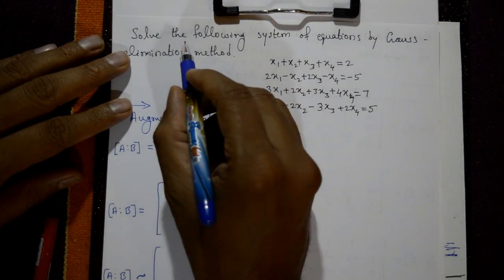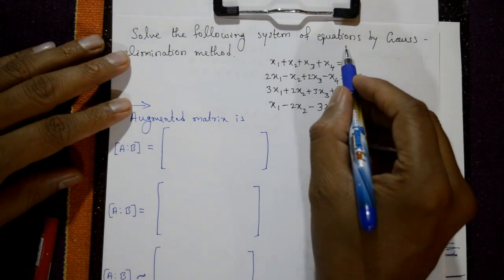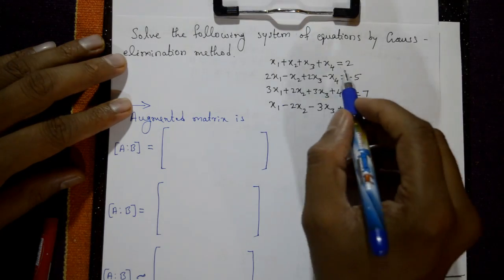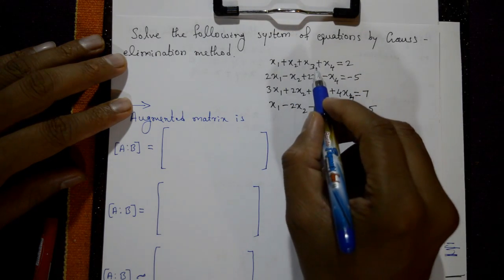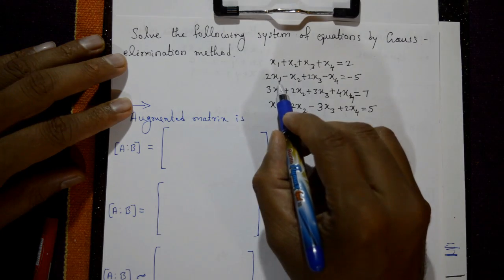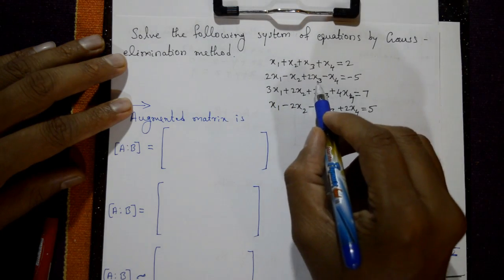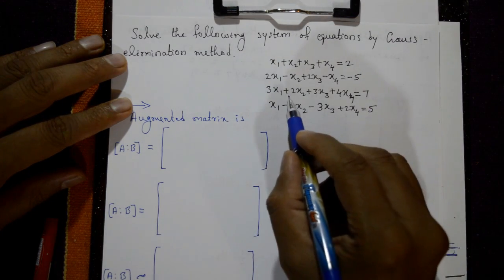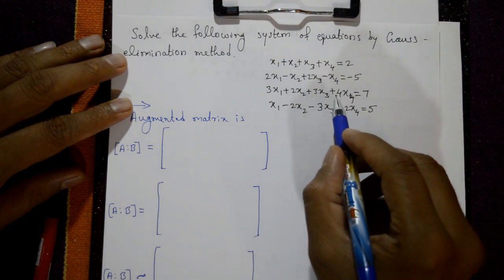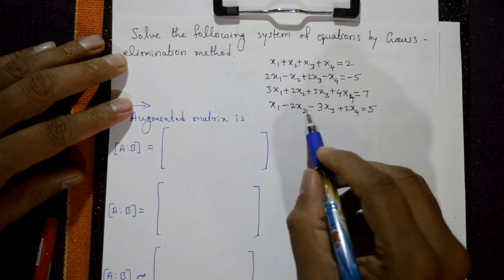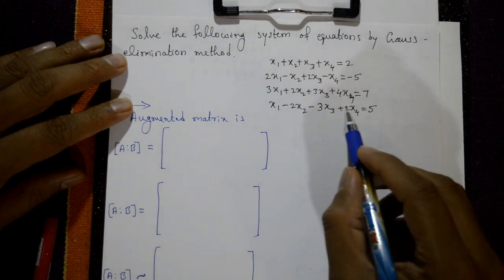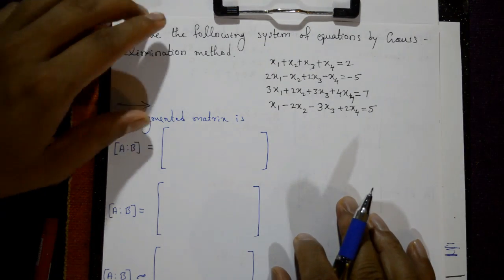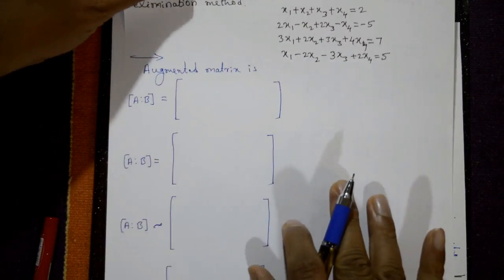Next example: solve the following system of equations by Gauss elimination method. The equations are: x1 plus x2 plus x3 plus x4 = 2; 2x1 minus x2 plus 2x3 minus x4 = -5; 3x1 plus 2x2 plus 3x3 plus 4x4 = 4.